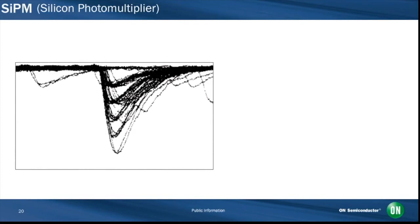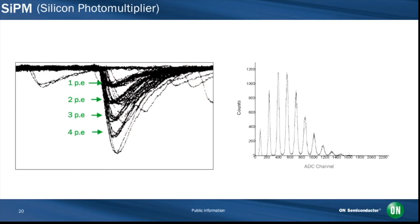The response from each microcell is very uniform, and the individual photon levels can be very clearly observed, as in the scope trace here. As well as the single photon level, the discrete levels corresponding to 2, 3 and 4 detected photons are also clearly distinguished. The corresponding charge histogram also shows the photon numbers clearly defined.